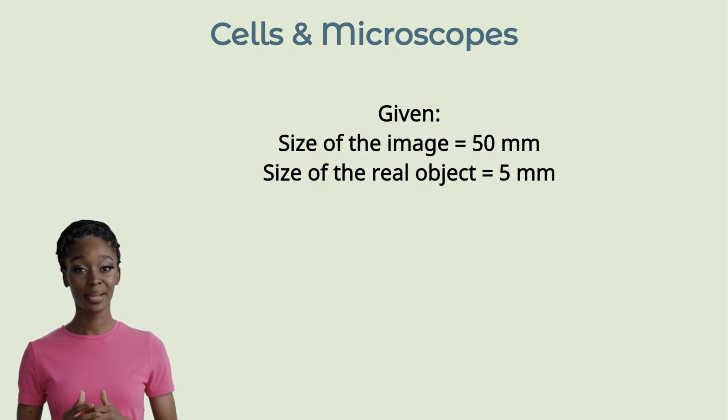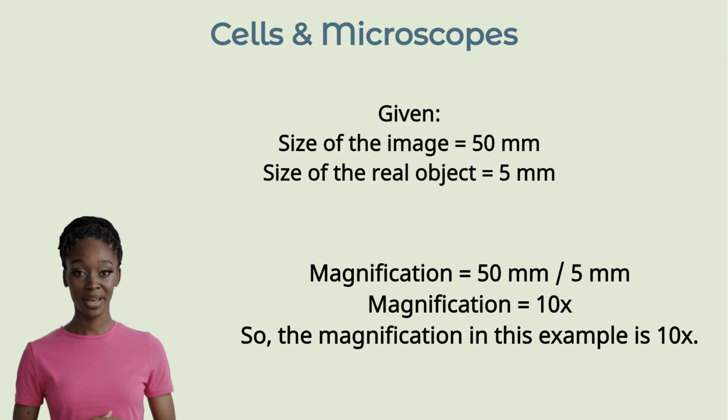Let's take an example. If the size of the image is 50mm and the size of the real object is 5, the magnification would be 50 divided by 5, which gives a magnification of 10.